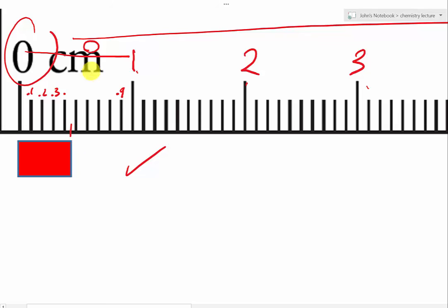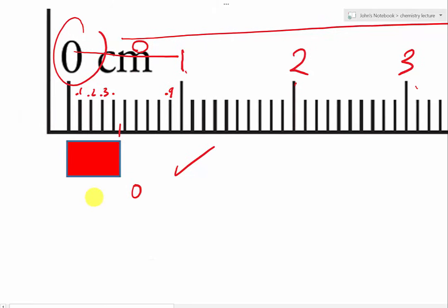We can prove that it is zero. It's not even long enough to be one, so it's zero point something. And we can prove that it is zero point one, zero point two, zero point three, and zero point four, because we can see the markings.